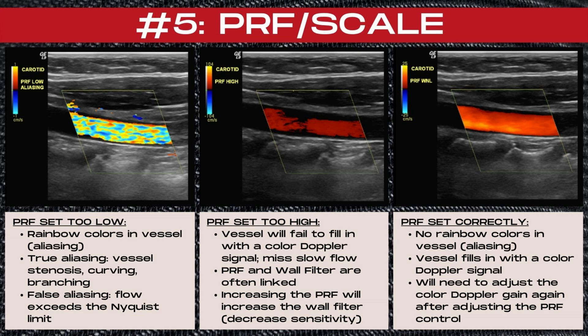Aliasing can also represent true velocities, such as within an area of vessel curvature or narrowing, or when flow velocities become turbulent and increase in velocity. Causes of false aliasing are the use of angles over 60 degrees or a PRF that's set too low. Ultrasound pulses are transmitted at a certain frequency, and the number of pulses of sound that occur in one second is the PRF or pulse repetition frequency. The PRF or scale control increases or decreases the range of velocities the ultrasound machine can detect and changes the range of velocities displayed on the color Doppler map. In the scenario to the left, the PRF is set too low and you're going to see rainbow colors within the vessel — this is aliasing.